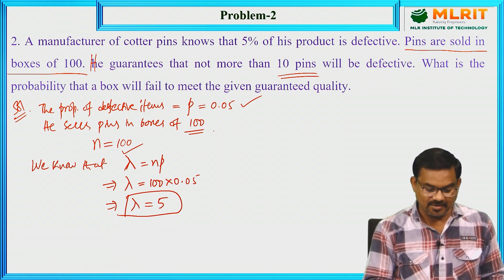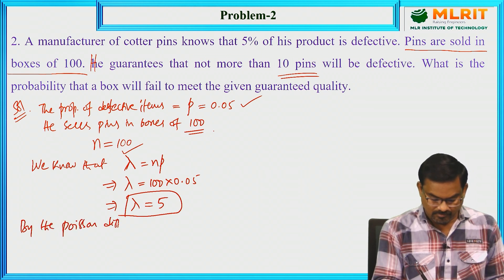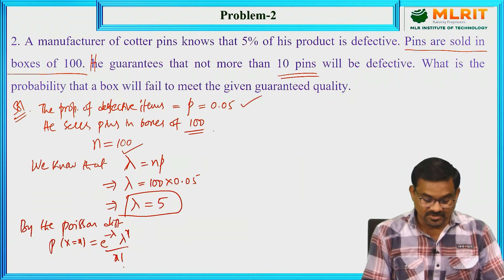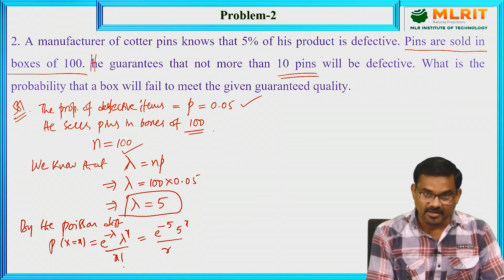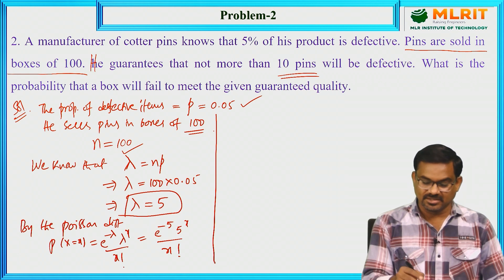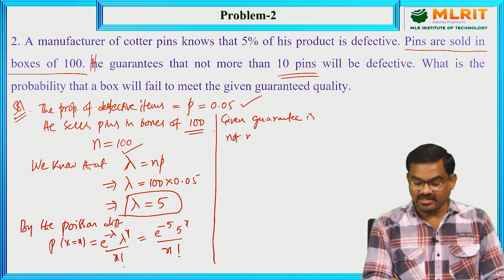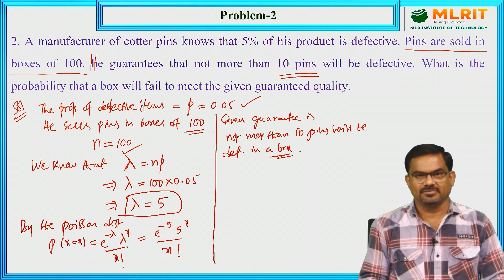Now we have the value of λ. By Poisson Distribution, the probability of x successes is e^(−λ) · λ^x / x!, and here λ = 5, so it becomes e^(−5) · 5^x / x!. The given guarantee is not more than 10 defective pins — at maximum there will be 10 defective pins.